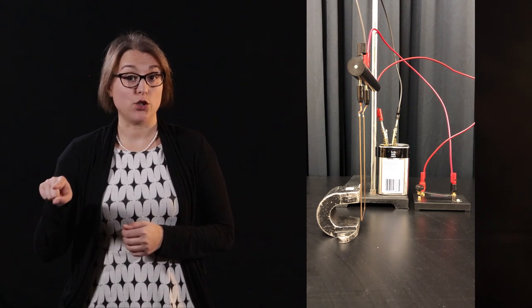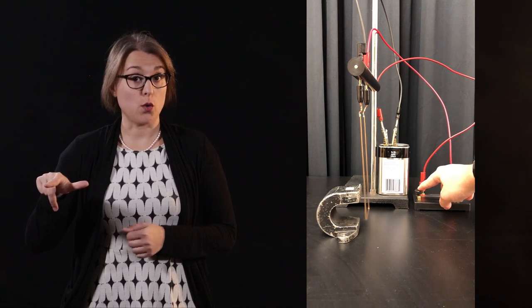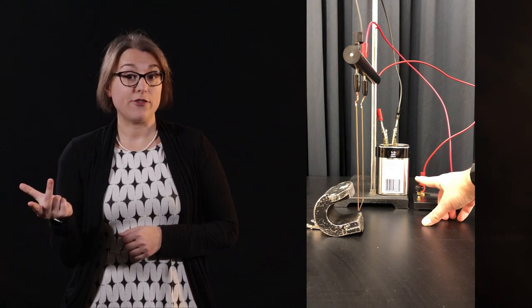Let's say the current points in the direction pointing out of the screen and toward you. If the magnetic field points down, then the deflecting force will point to your right. If the current points out of the screen and toward you, and the magnetic field flips to point upward, then the deflecting force will point to your left. You will explore this deflecting force in more detail in the lab on magnetism and electromagnetic induction.